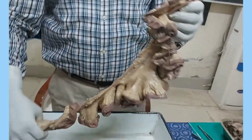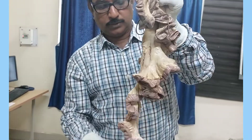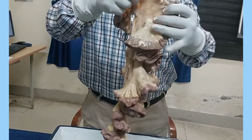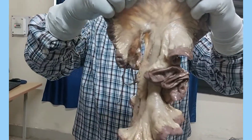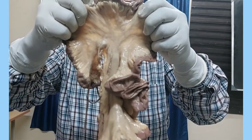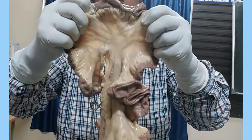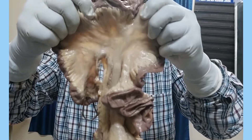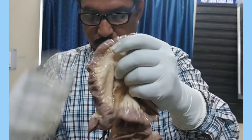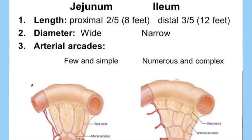In another specimen of the small intestine, you can see this side — here fat is maximum, more fat. Because of the abundance of fat on this side, the translucent windows are not prominent, but the number of arcades and vasa recti are visible. On the jejunal side, the translucent window is better and clearer than the ileal side.